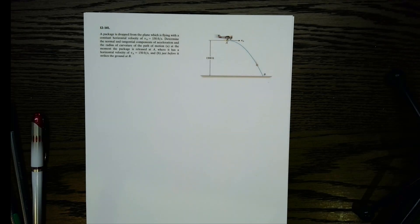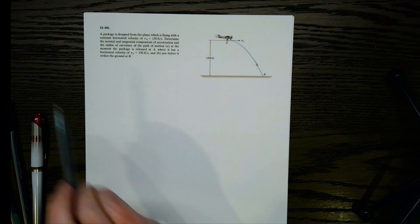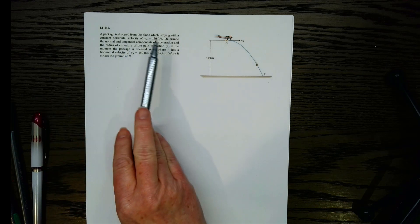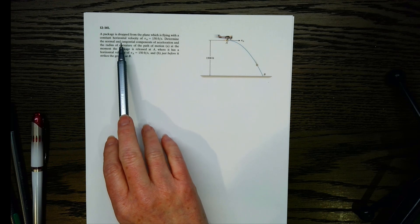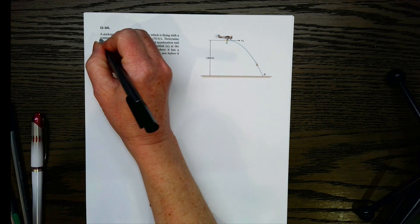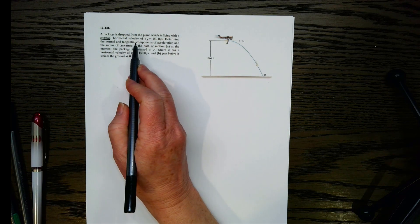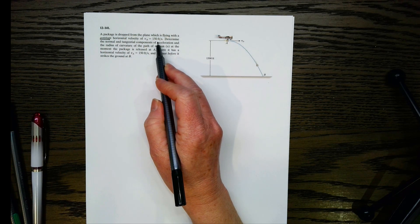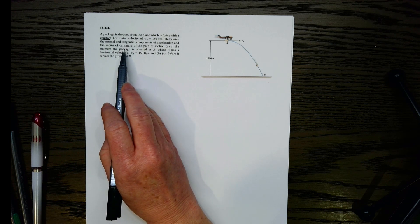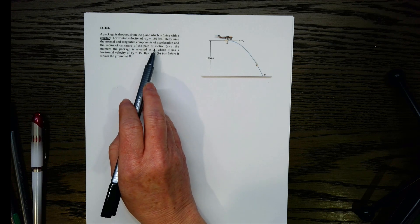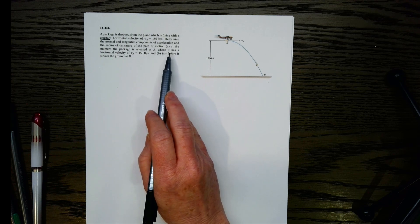Let's look at this curvilinear motion problem using N and T coordinates, normal and tangential. What we've got here is a plane with a package being dropped out. It's flying along with a constant horizontal velocity of 150 feet per second. We want to find the normal and tangential components of acceleration and the radius of curvature of the path of motion at a couple different points.